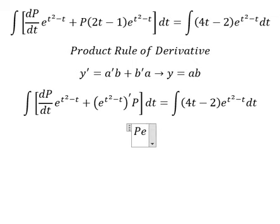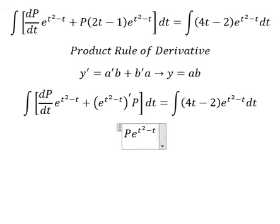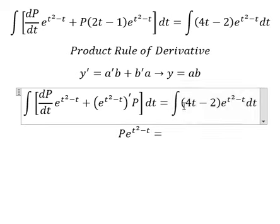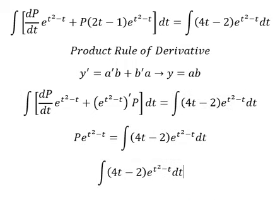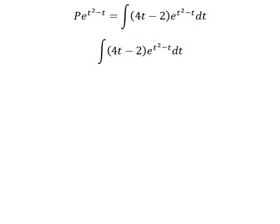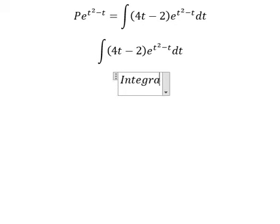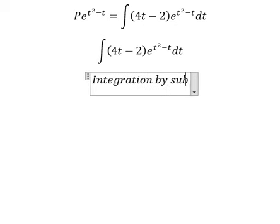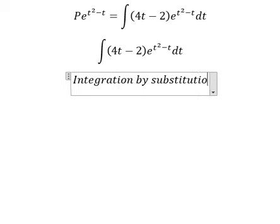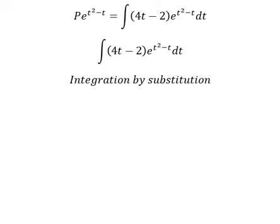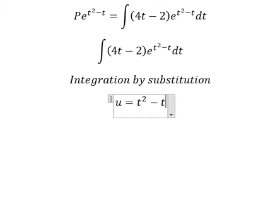So y equals b times e to the power of t squared minus t. Now I will concentrate on integrating this expression only. We can use integration by substitution.